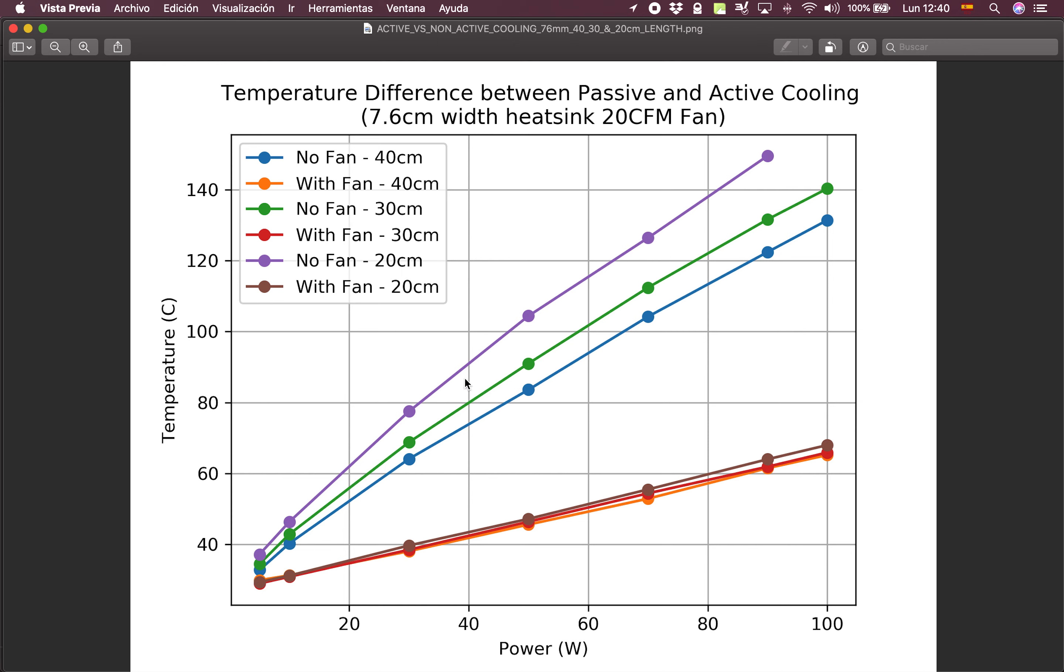As expected, the temperature for any power that was fed into the resistance is higher than for the other two lengths which are greater: 30 cm for the green line and 40 cm for the blue line.